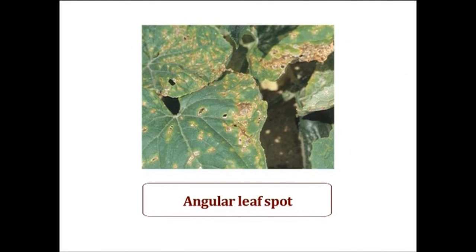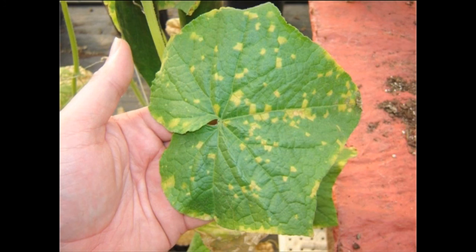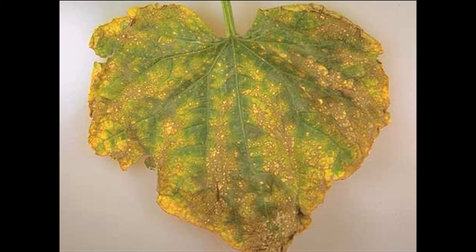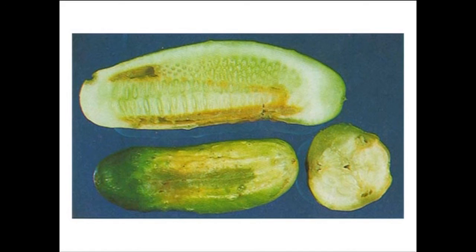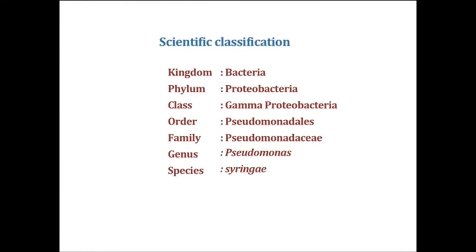The next important disease is angular leaf spot. Water-soaked spots delimited by veins appear on leaves; a crust of bacterial ooze forms on them, and dead tissue may drop off leaving shot holes. Fruits show circular, brown to black, superficial lesions. Scientific classification: Kingdom Bacteria, Phylum Proteobacteria, Class Gammaproteobacteria, Order Pseudomonadales, Family Pseudomonadaceae, Genus Pseudomonas, Species syringae.